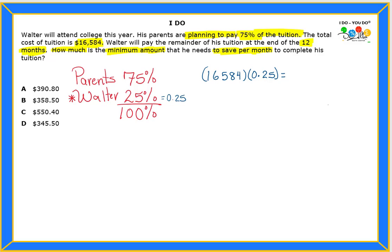Now, this will tell us how much money Walter is paying, not how much the parents, because we're not using 75%, we're using 25%, and this is equals to 4,146. That's how much money Walter needs to pay.